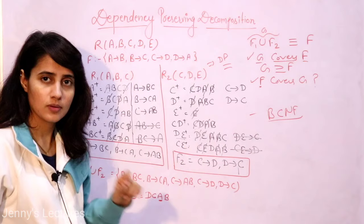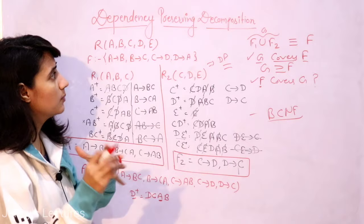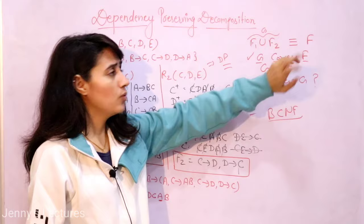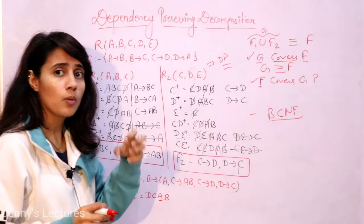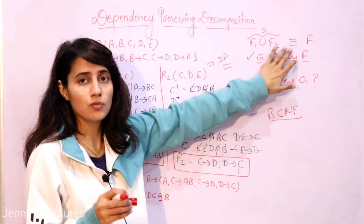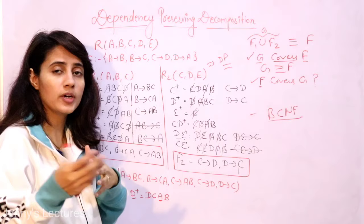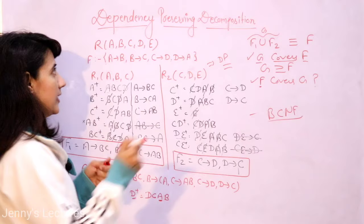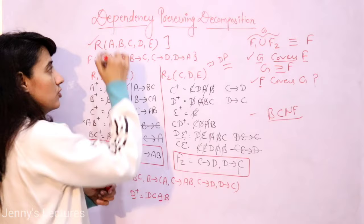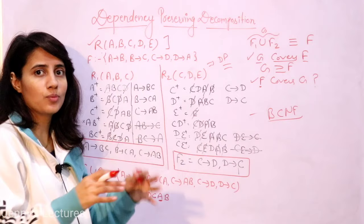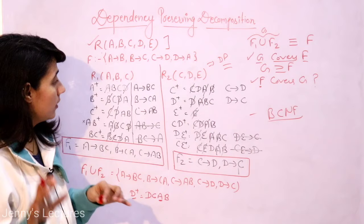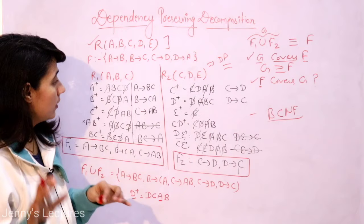I hope you understood how to find out whether a particular decomposition is dependency preserving or not. If you want a separate video explaining how to check equivalency of two functional dependency sets, let me know in the comment box. Also, as a question: tell me which is the highest normal form for this relation R. In the next video, I'll discuss lossless decomposition with the help of an example. Bye, take care.